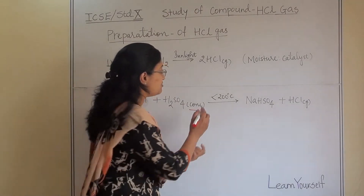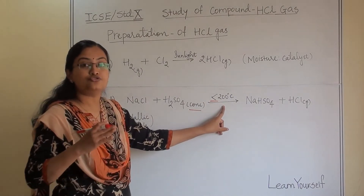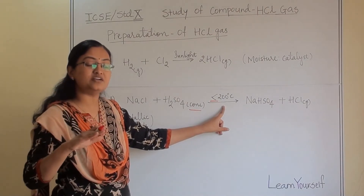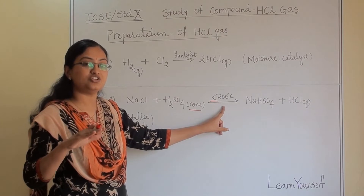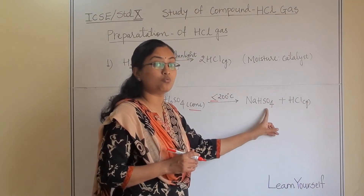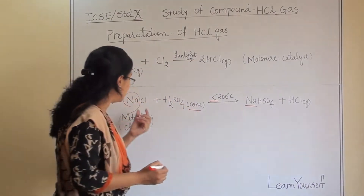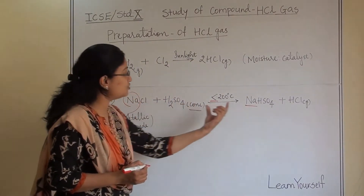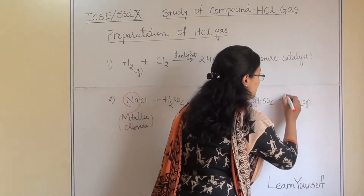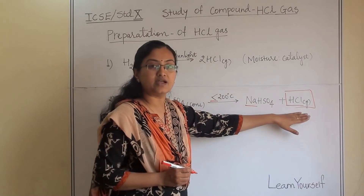The temperature we are performing at is less than 200 degrees centigrade — it should not go above 200 degrees centigrade. We have to maintain below 200°C throughout the reaction. Then we are going to get sodium bisulphate, or whatever metal you have taken, that metallic bisulphate. For example, if you have taken potassium, you will get potassium bisulphate, plus HCl gas.